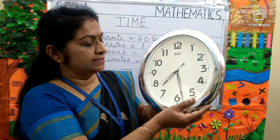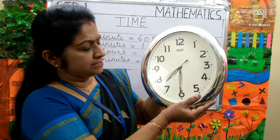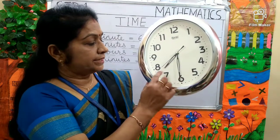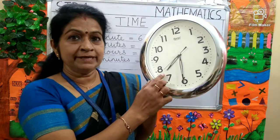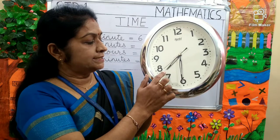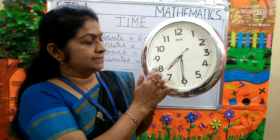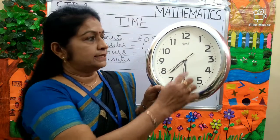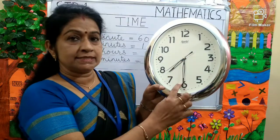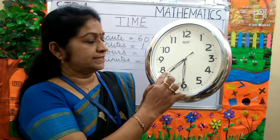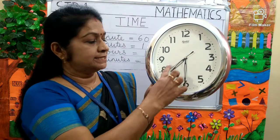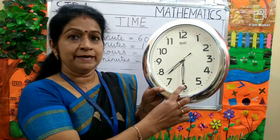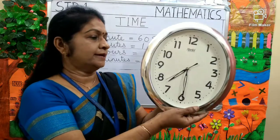Again, it is moving and it has reached on 6. Can you tell me the time? It is between 7 and 8 and the minute hand is on 6. That means 30 minutes. So, the time is 7.30, or you can say half past 7.